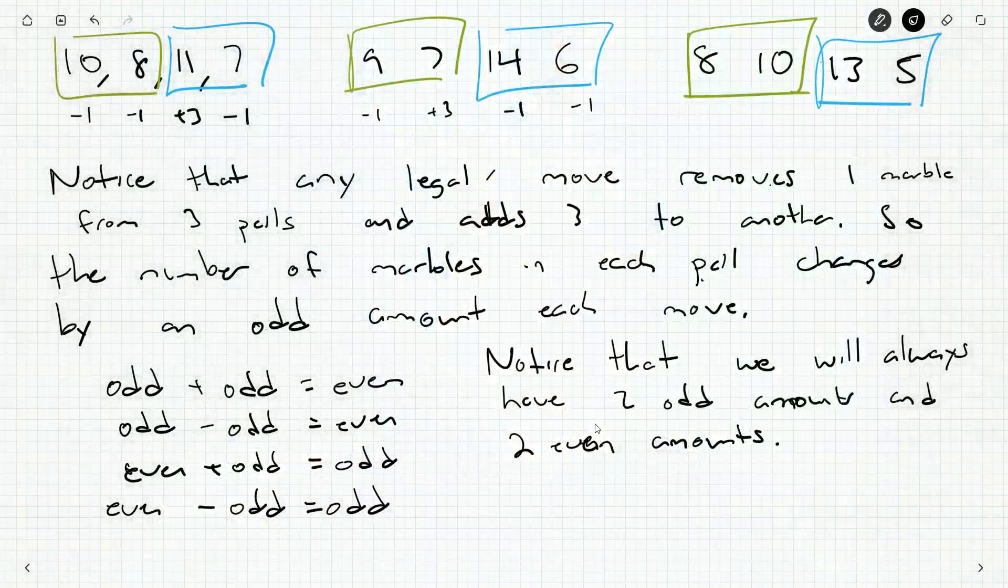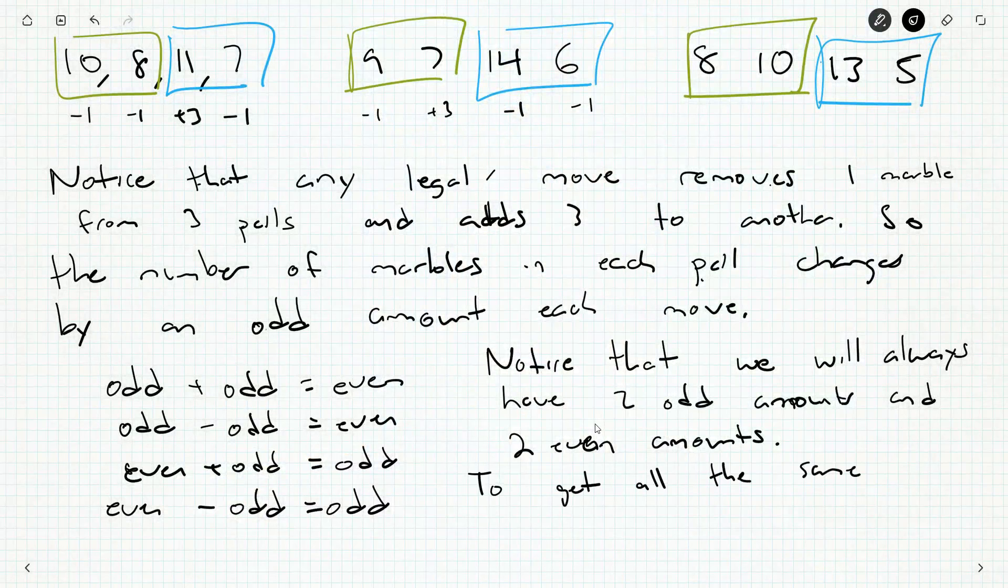And having two odd amounts in the buckets and two even amounts in the buckets doesn't change. Which buckets have which changes, but not the fact that there are two odd and two even. This is what doesn't change. This is what is invariant. So we've noticed that. We've noticed we'll always have two odd amounts and two even amounts.